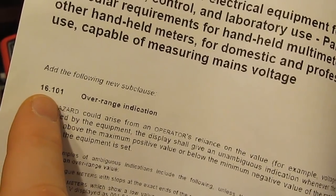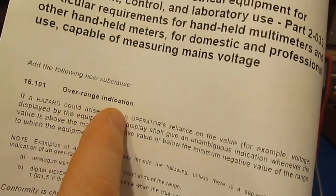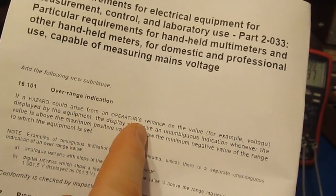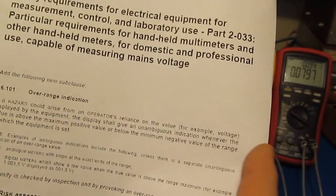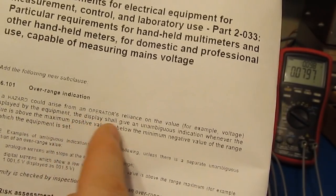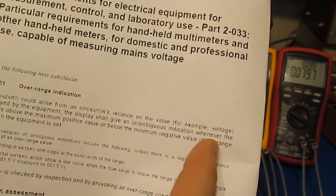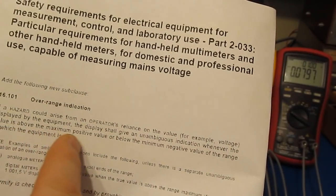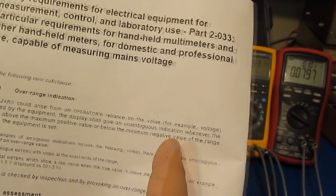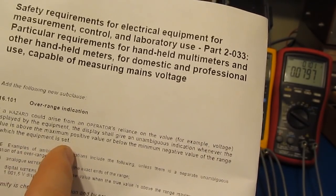I want to refer to section 16.1, overrange indication. If a hazard could arise from an operator's reliance on the value, for example voltage, displayed by the equipment, the display shall give an unambiguous indication whether the value is above the maximum positive value or below the minimum negative value of the range to which the equipment is set.